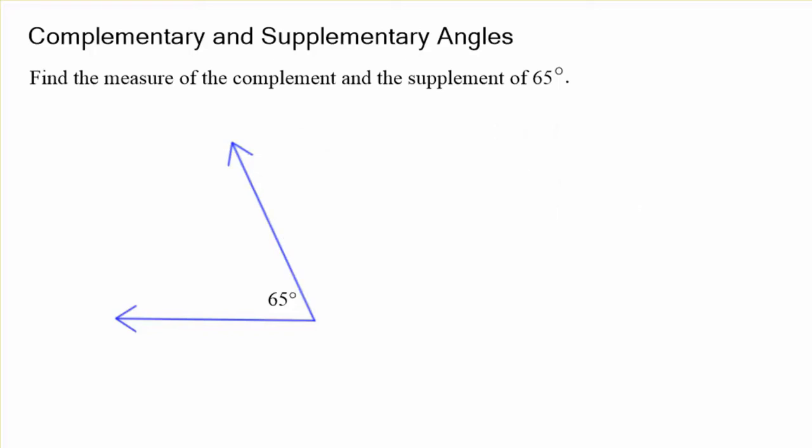Well, what about the supplement? Well, it would look like that if they were adjacent. And, some angle x plus 65 equals 180 degrees. We subtract 65 from both sides to solve, and we would get x is equal to 115 degrees. So, we would say the supplement of 65 degrees is 115 degrees.